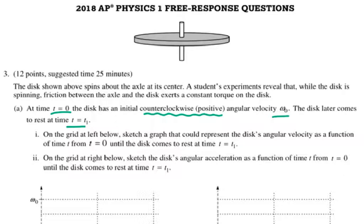On the grid at left below, sketch a graph that could represent the disc's angular velocity as a function of time T from T sub zero to T equals T sub one.